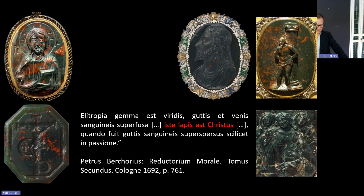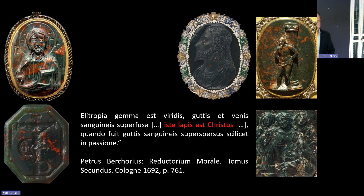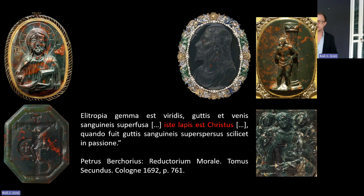When Georges Didi-Huberman, in his seminal work on Fra Angelico and his painted marble panels in San Marco, states that 'Christ was symbolically anticipated by many scriptures in the form of a stone,' perhaps we should add to this list the heliotrope, which in terms of blood symbolism has not yet been part of the scholarly discourse on stones. I do not believe, however, that Berhurius was the first Christian author to make this direct analogy to the Passion of Christ in the context of the material properties of the heliotrope. Berhurius's brief but important additional characterization of the stone certainly contributed to the development of the legend of the creation of the heliotrope.